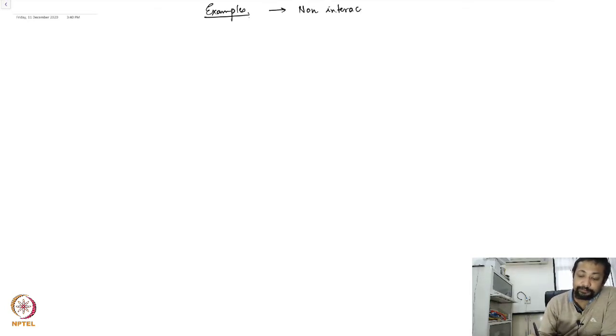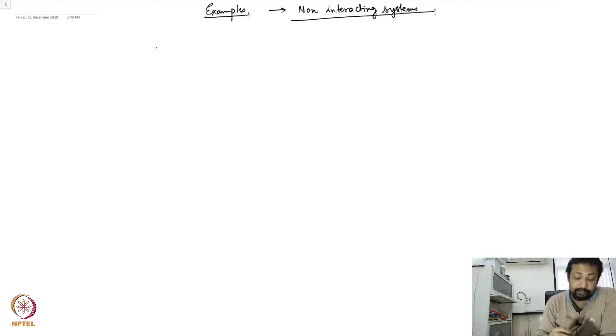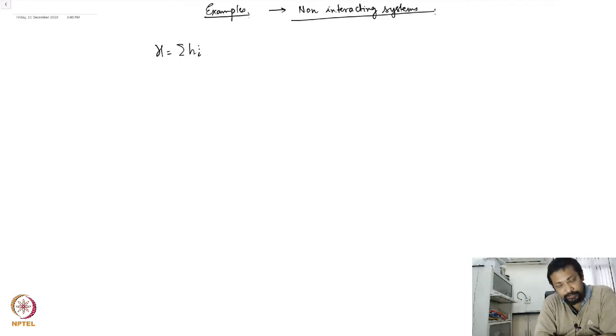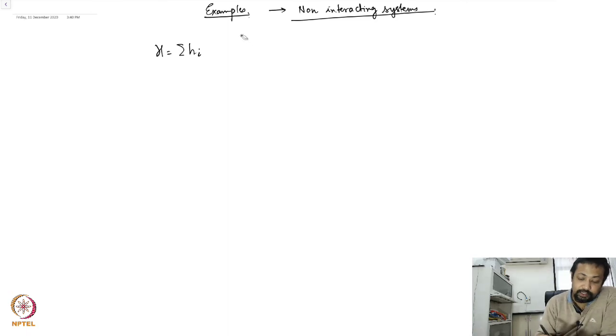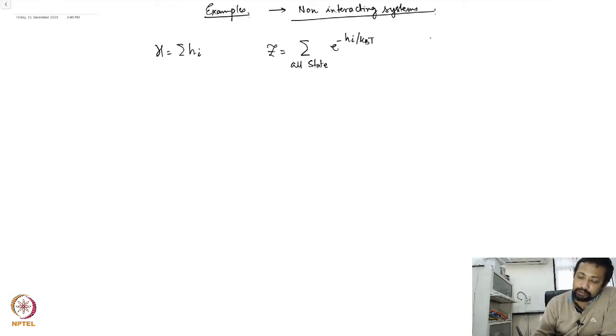Now let's look at examples of how to handle the canonical ensemble. Throughout this, we will be concerned only with non-interacting systems. When you have a non-interacting system, the Hamiltonian can be written in terms of single-particle Hamiltonians.